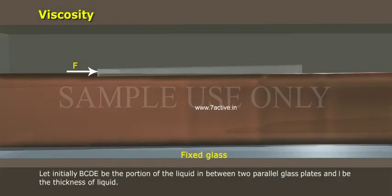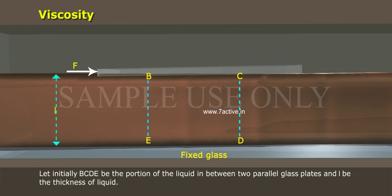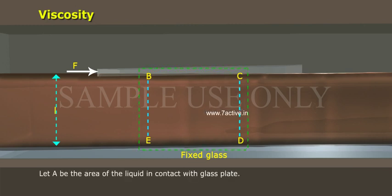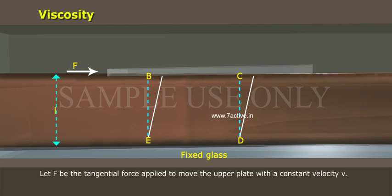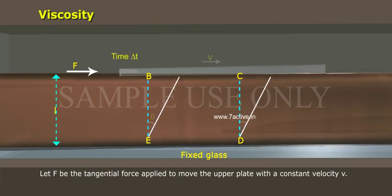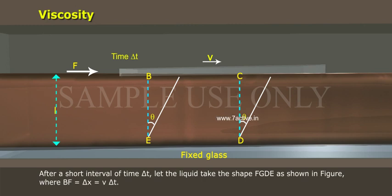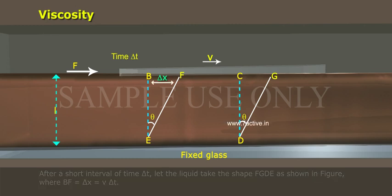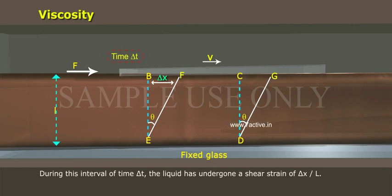Let initially B, C, D, E be the portion of liquid between two parallel glass plates, and let L be the thickness of the liquid. Let A be the area of liquid in contact with the glass plate, and let F be the tangential force applied to move the upper plate with constant velocity V. After a short interval of time delta T, let the liquid take the shape FGDE as shown in the figure, where BF equals delta X equals V times delta T. During this interval delta T, the liquid has undergone a shear strain of delta X divided by L.